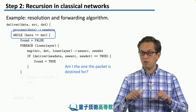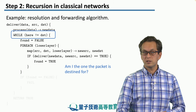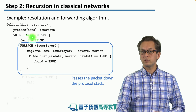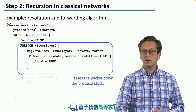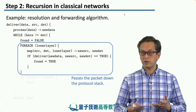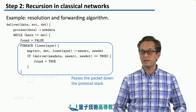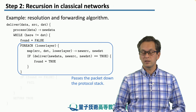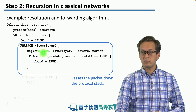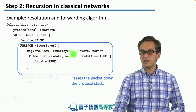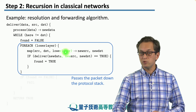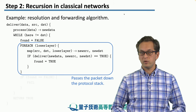While my address is not the destination, I run the following code. First, I set the "found" flag to false because I'm not the destination. Then I run a for loop through all of the lower layers below me. Remember, in recursive networks a single node may represent an entire network at lower levels. The node passes the packet down the protocol stack, and for each layer it must translate the original source, destination, and lower layer information into variables "new source" and "new destination" corresponding to the lower layers.